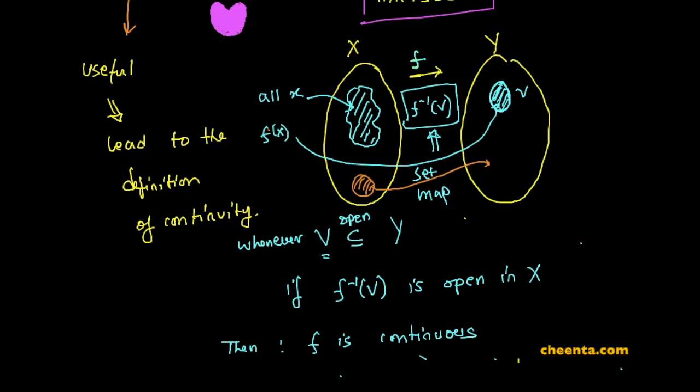So, what we are not saying is open sets are mapped to open sets. This is a very different thing. These maps are called open maps. They are very special maps.